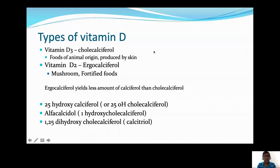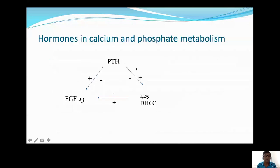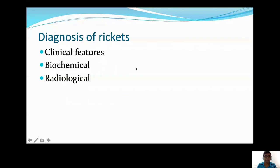For bone mineralization, you need optimum levels of calcium and phosphate in the bone. This is maintained by 1,25-DHCC (calcitriol), PTH, and fibroblast growth factor 23 (FGF23), which is produced by osteocytes and inhibits the synthesis of 1,25-DHCC, also causing phosphate excretion from the kidneys. There is a homeostasis between PTH, 1,25-DHCC, and FGF23: low calcium stimulates PTH, which increases production of 1,25-DHCC, while FGF23 feedback-inhibits 1,25-DHCC.